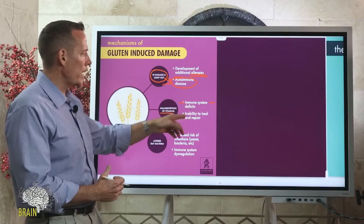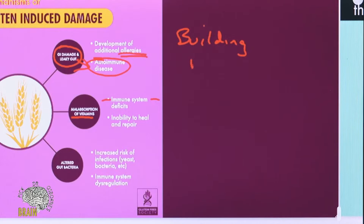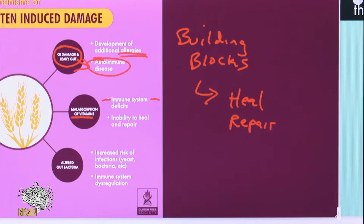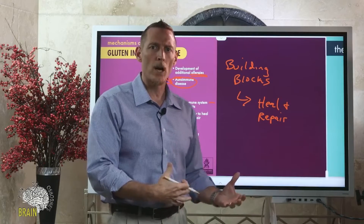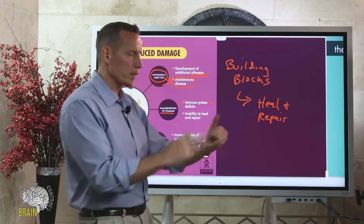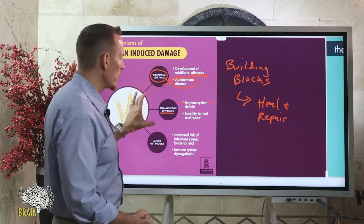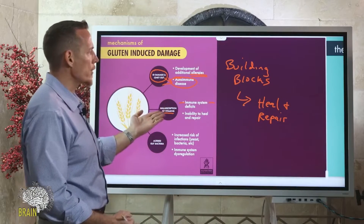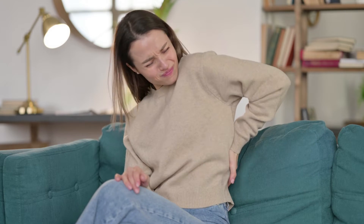There's also the inability to heal and repair. Nutrients are the building blocks for your body's ability to heal and repair. Every day our body takes on damage, and every day it heals and repairs — if it has what it needs. For example, when you go to the gym and work out, it takes nutrients like magnesium, zinc, and calcium to heal from that. Multiply this over five, ten, or fifteen years of malnourishment, and your body's ability to heal becomes diminished — you start aging much quicker.